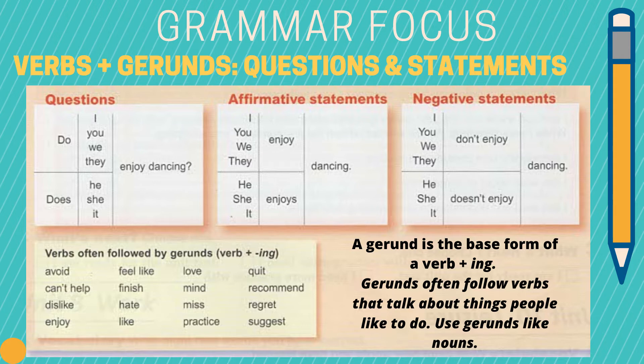Let's go ahead and look at how all this fits together in this structure. We have the questions: Do I enjoy dancing? Do you enjoy dancing? Do we enjoy dancing? Does he enjoy dancing? Does she enjoy dancing? And does it enjoy dancing? Remember, we use the word do before the pronouns I, you, we, and they, but we use the word does before the pronouns he, she, and it.